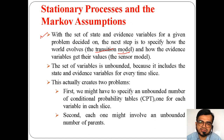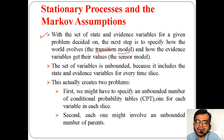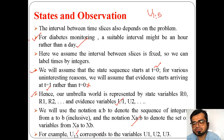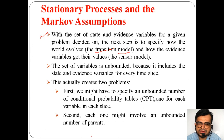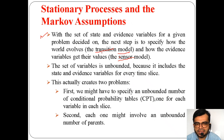Transition models describe how the state moves from the current step to the next step — how the world evolves. Sensor models describe how the evidence variables such as U1, U2, U3 get their values. These two models will be used: transition models for how the state changes from current to next step, and sensor models for how evidence variables get their values.